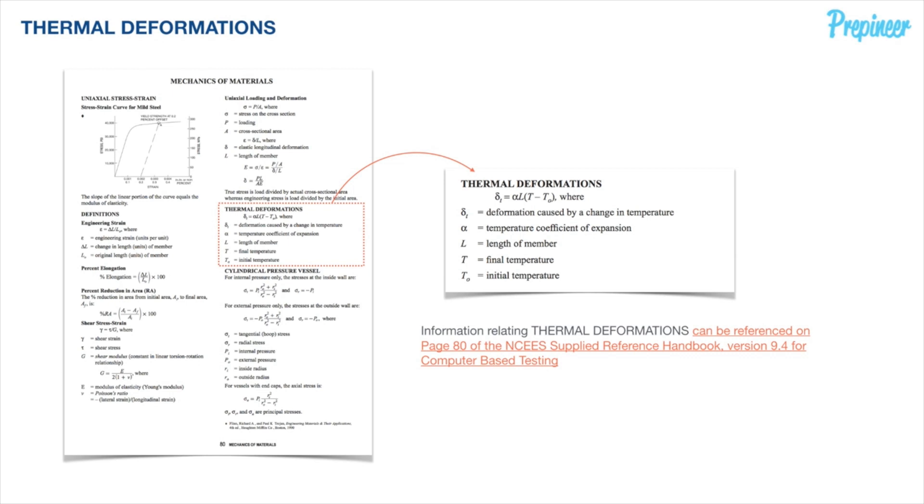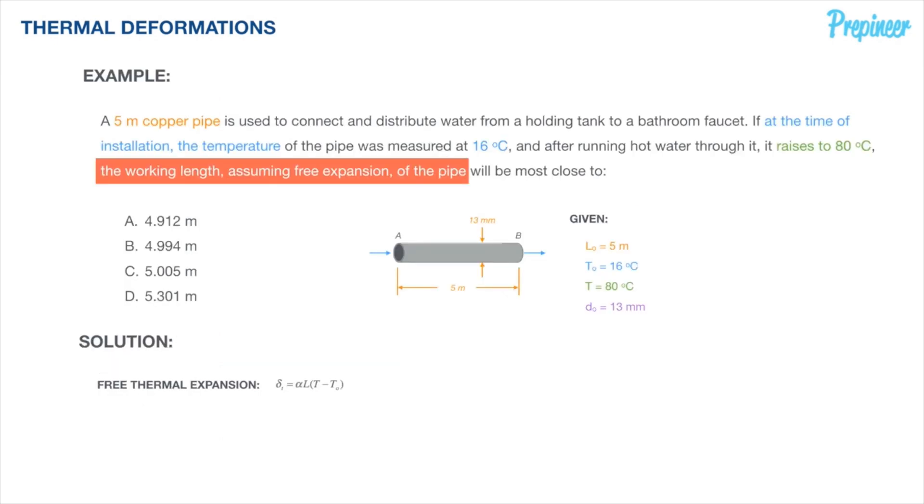This problem tells us that if we have some object or some member of length L which is taken through some thermal cycle where the temperature changes from T naught to T, then we are able to determine how much that member will deform or change in length, that's delta, by taking all the data alongside the specific coefficient of expansion or also called the coefficient of thermal expansion as it is defined in the given tables in our reference handbook. Remember that the coefficient of thermal expansion is the fractional increase in length per unit rise in temperature. So when all is said and done, the temperature units will cancel out, leaving us with the units of the length as it is defined.